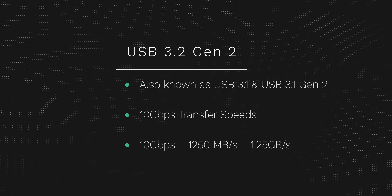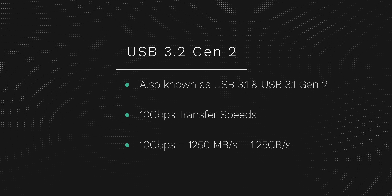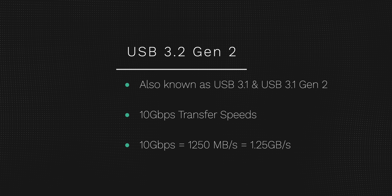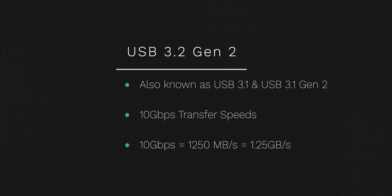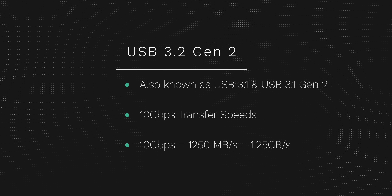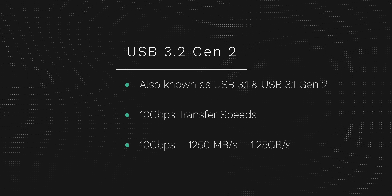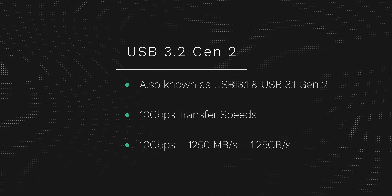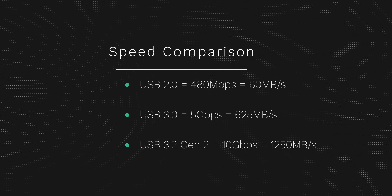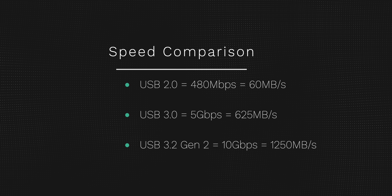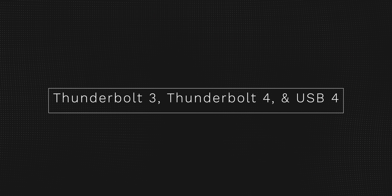USB 3.2 Gen 2, also known as USB 3.1 and USB 3.1 Gen 2, offers 10 gigabit per second transfer speeds, which is roughly 1250 megabytes per second, or 1.25 gigabytes per second, which is two times faster than USB 3.0 and about 20 times faster than USB 2.0. And then it starts to get a little more confusing when we discuss the next standard above these, which is Thunderbolt 3, Thunderbolt 4, and USB 4.